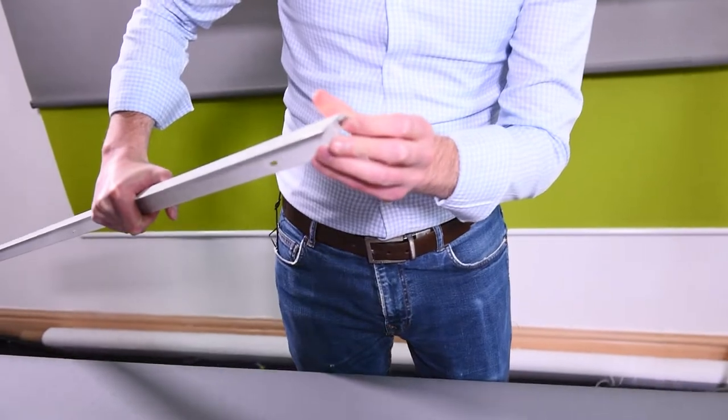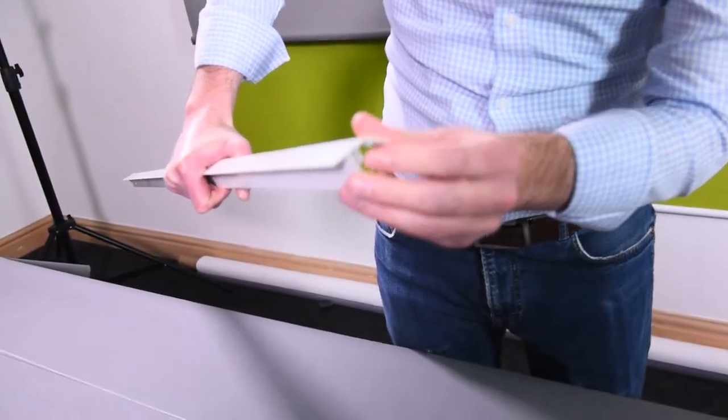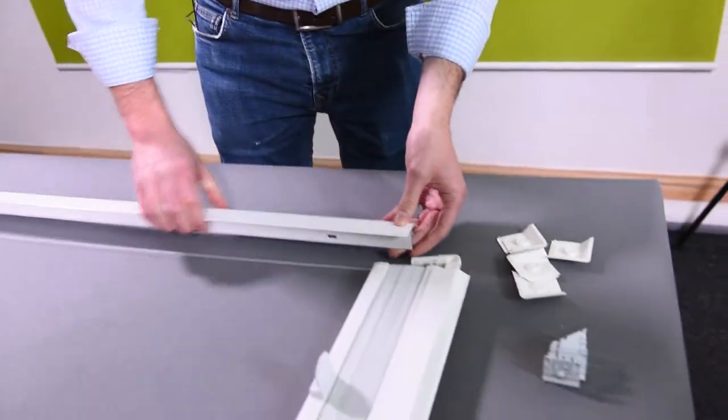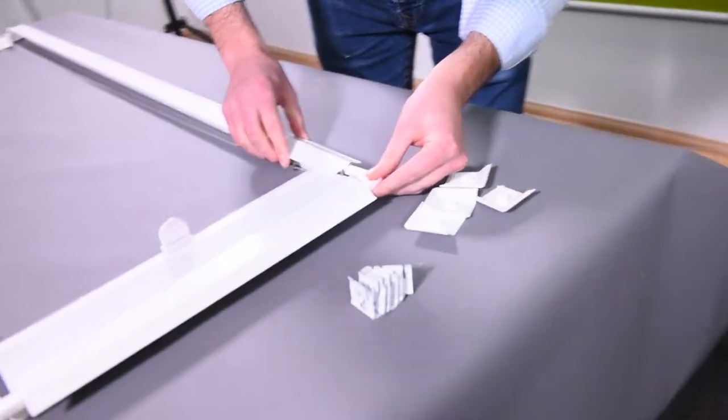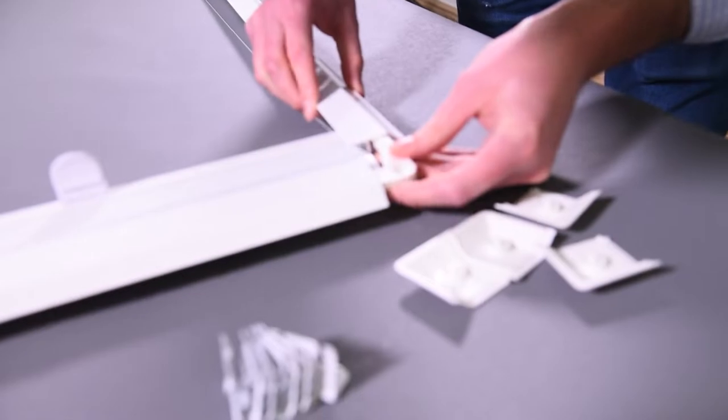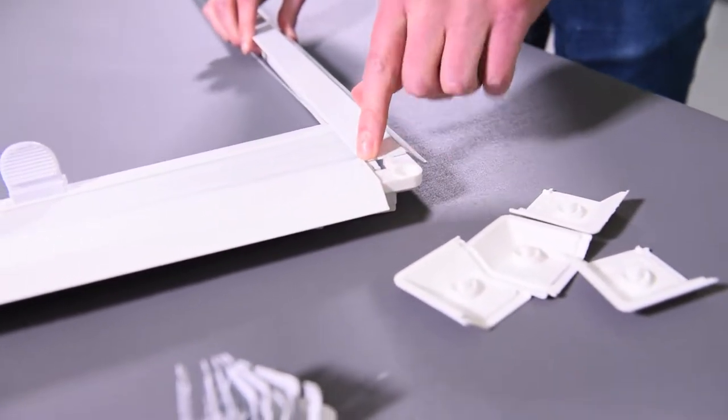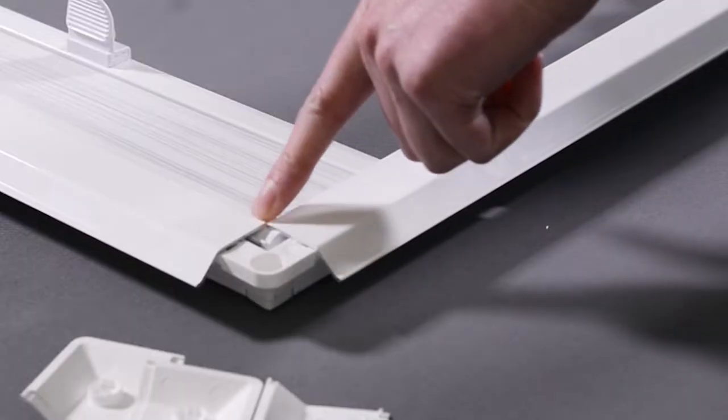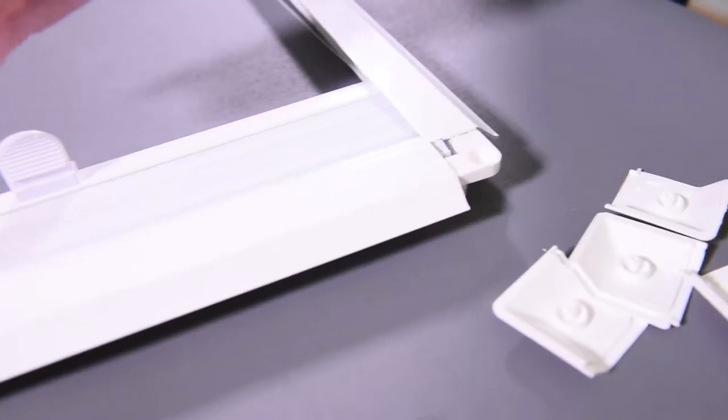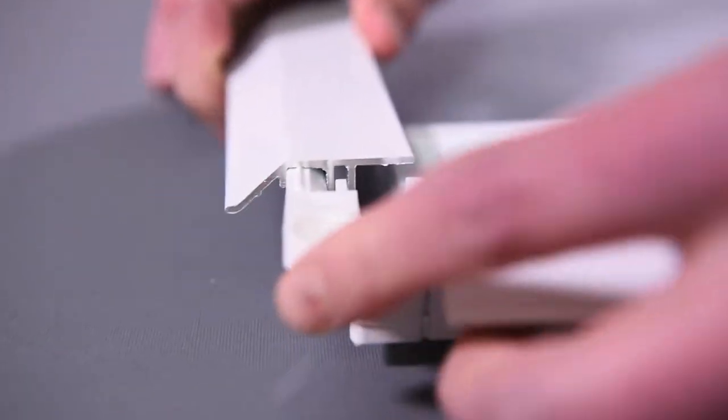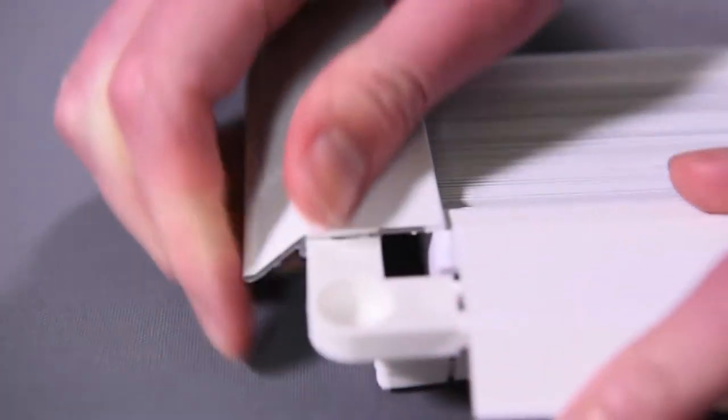Where the square is here on the side profile, that's just going to push in onto the little angle bracket here, so you just push that up and that will just meet the top rail there. We do the same on the other side, just push that up to there and then exactly the same on the bottom.